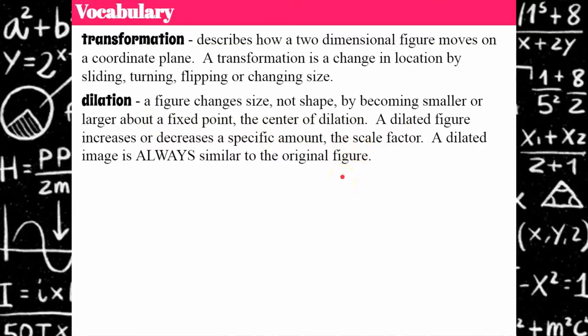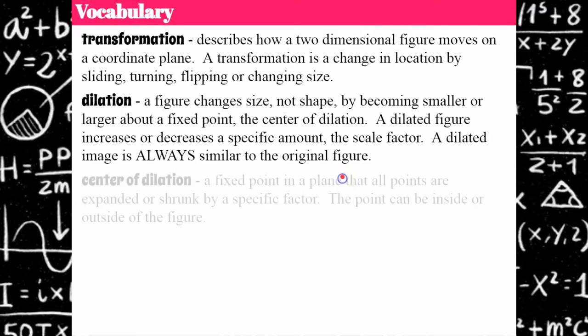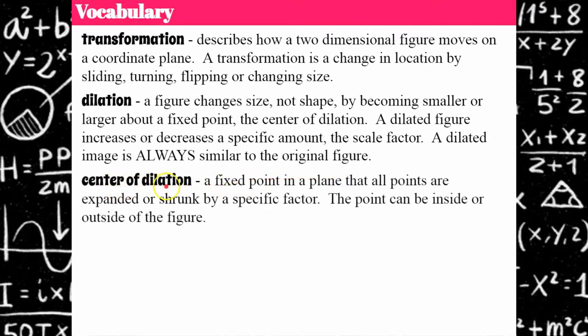The transformed image will be proportional to the original. The center of dilation is a fixed point in a plane where all points are expanded or shrunk by a specific scale factor — how many times larger or how many times smaller. The point can be inside or outside of the figure. Let's review vocabulary: an image is the figure after transformation, labeled using the apostrophe, which we refer to in math as prime.